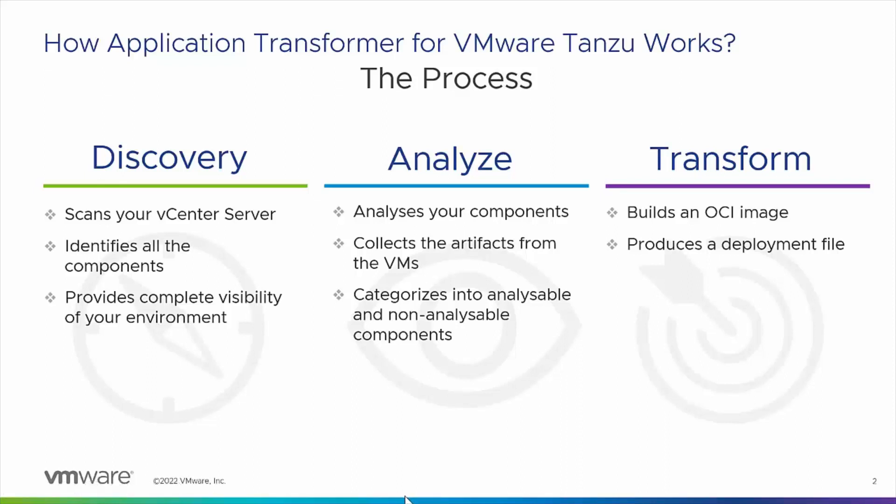Containerization involves three major steps: Discovery, Analyze, and Transform. During Discovery, the product scans your vCenter server to discover all available VMs and to identify all the components, providing complete visibility of your environment. Application Transformer for VMware Tanzu then analyzes your discovered components and collects the artifacts from the VMs, categorizing them into analyzable and non-analyzable components. Next comes the transform phase, where the product builds an OCI image from analyzed artifacts and produces a deployment file, which you can use to deploy your application on the VMware Tanzu Kubernetes Grid cluster.